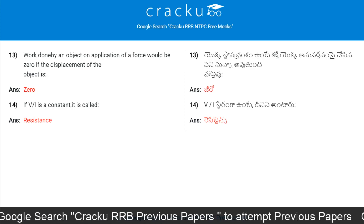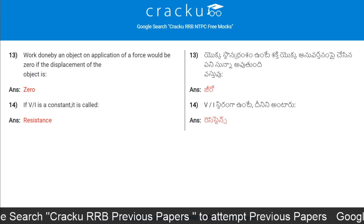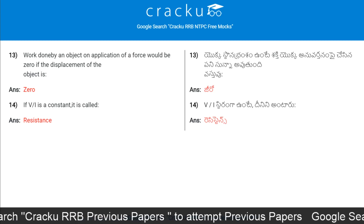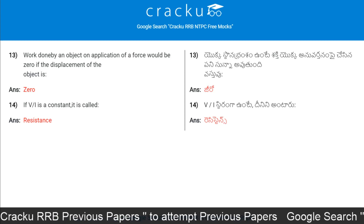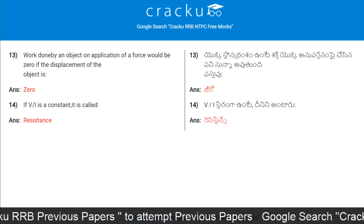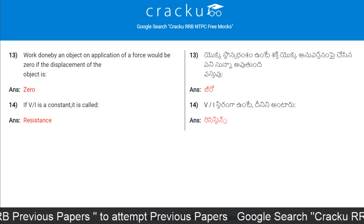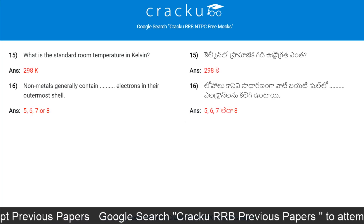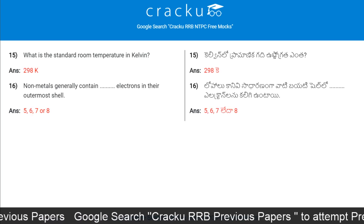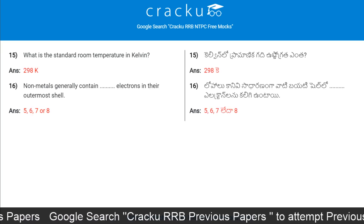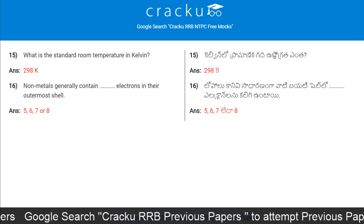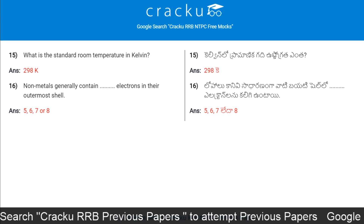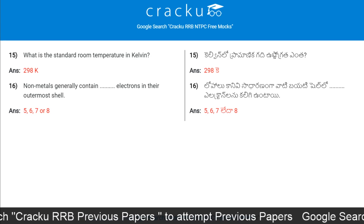If V by I is a constant, it is called Ohm's law. What is the standard room temperature in Kelvins? 298 Kelvins.